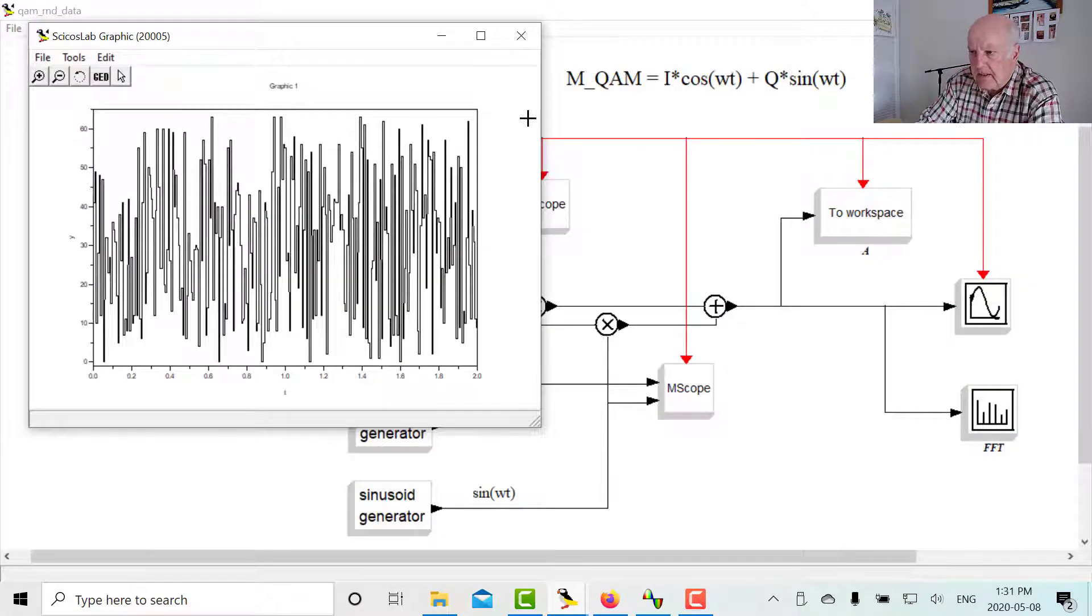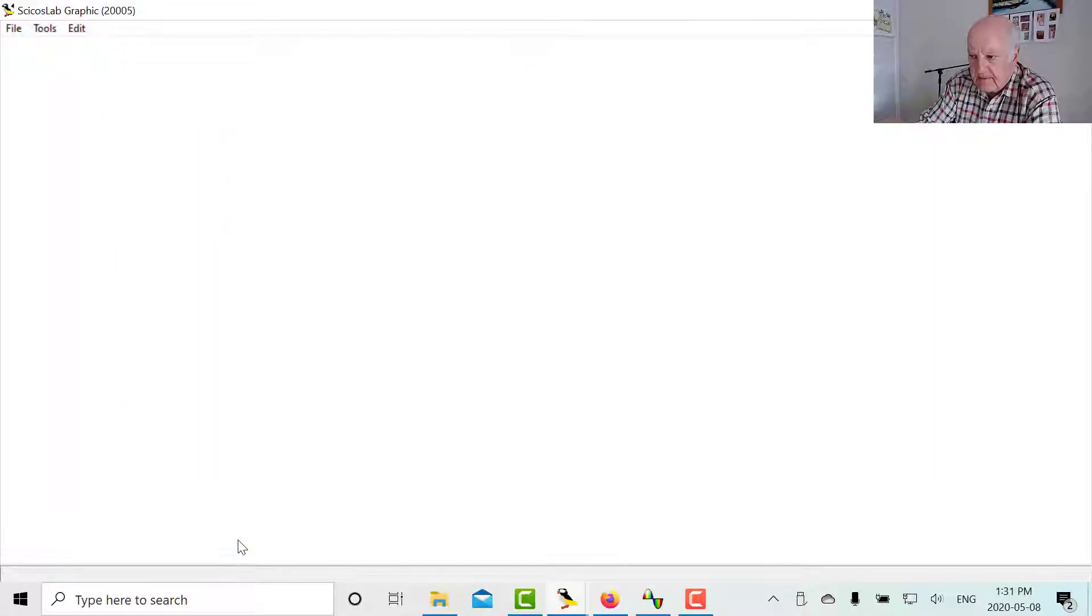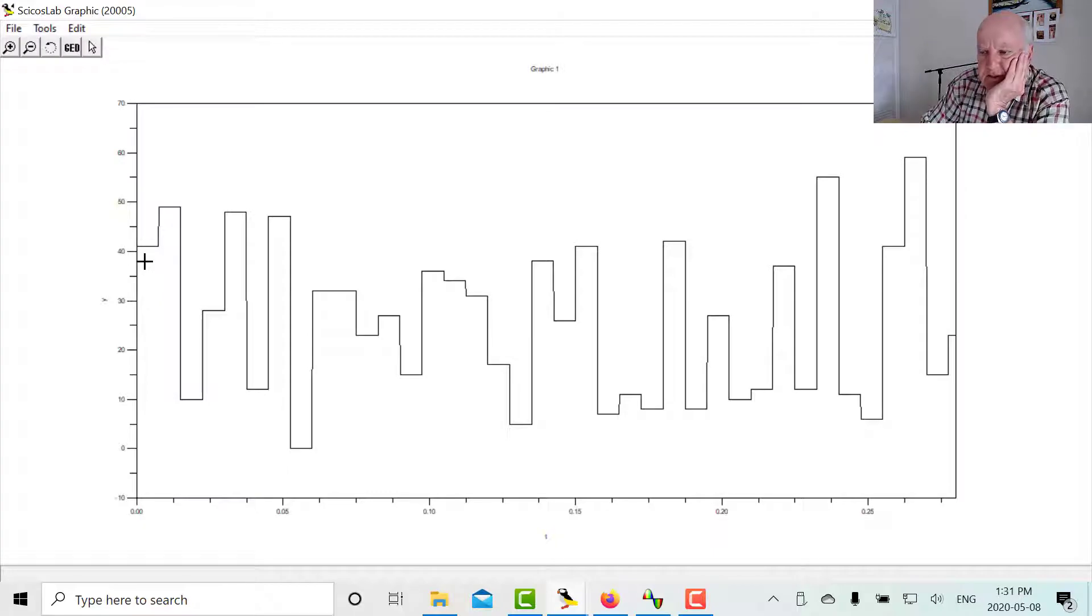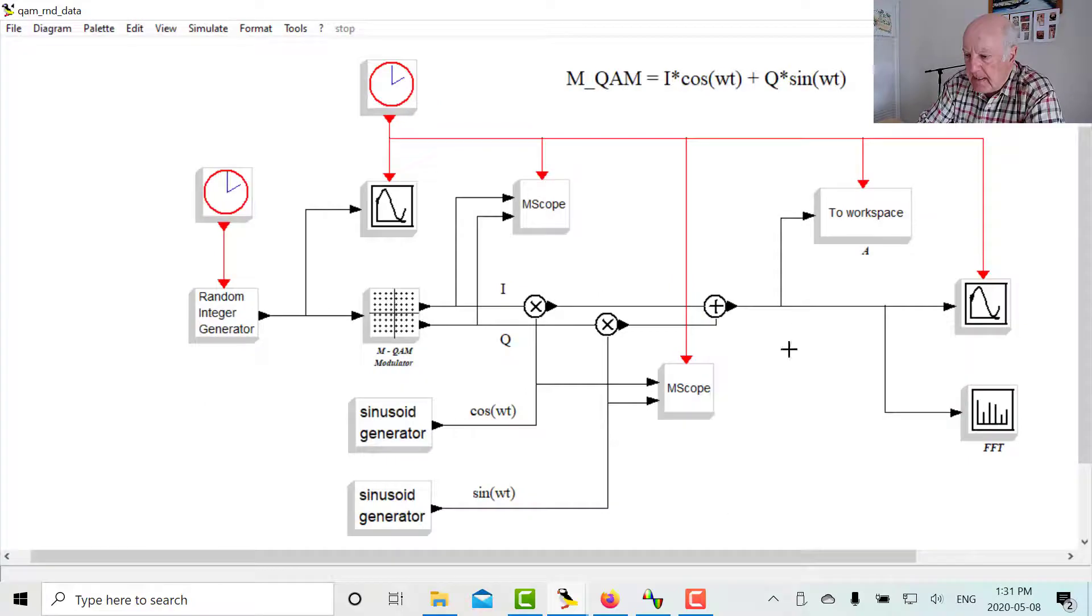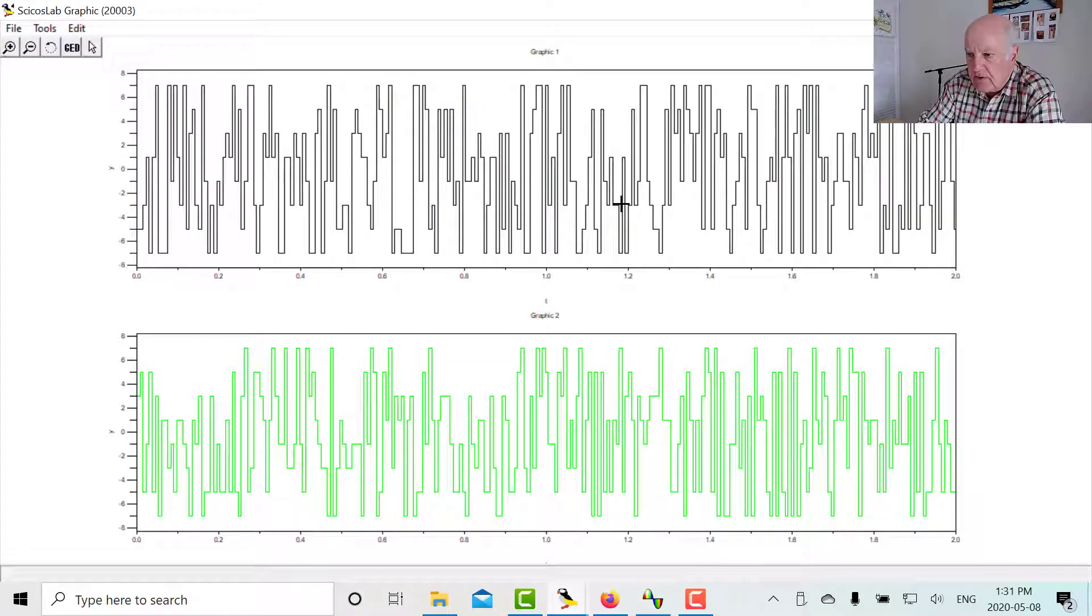Now, this shows you the output of the random number generator. So if I expand that. So there's my first digit coming out of the random integer generator, it's 41. It lasts for 7.5 milliseconds. And there's the next one, it's 50. And then that one looks like it's around 10, etc. So those are the various random integers coming out of the generator. And then that gives rise to these, which are your I and Q values. Remember, we said we have eight possible I values and eight possible Q values.